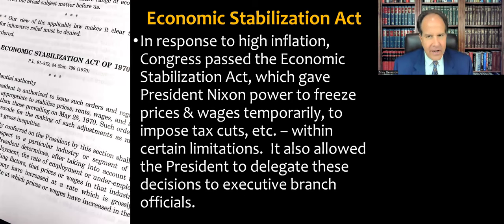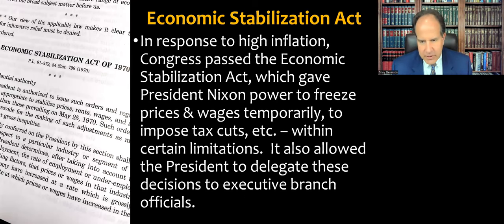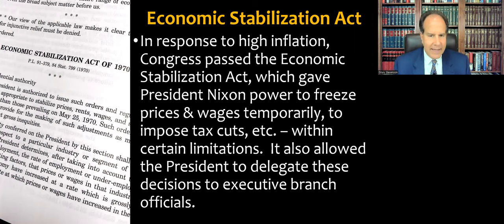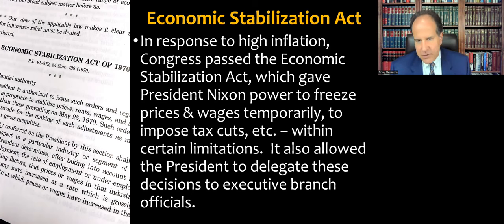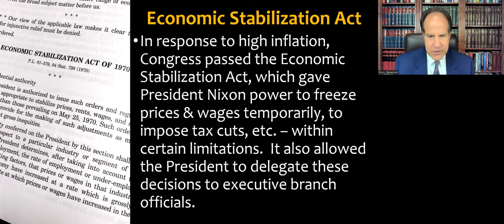In response to high inflation, Congress passed the Economic Stabilization Act, which gave President Nixon power to freeze prices and wages temporarily and to impose some tax cuts within certain limitations, in order to control runaway inflation and stop price gouging. Recording this in 2022, students will remember that during the COVID pandemic there were shortages of items like toilet paper, and coming into 2022, consumer prices started rising due to disruptions in the supply chain. We had a similar but even worse situation in the early 1970s, so Congress acted to freeze all prices and wages.